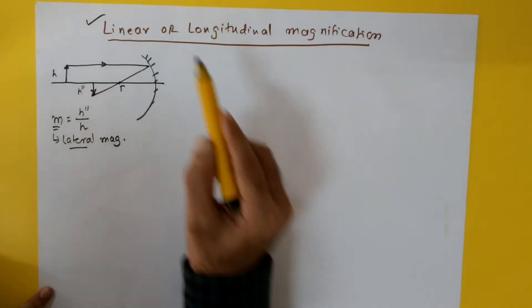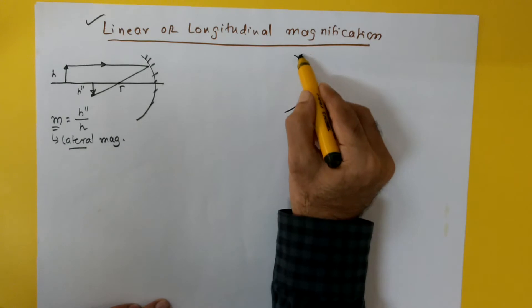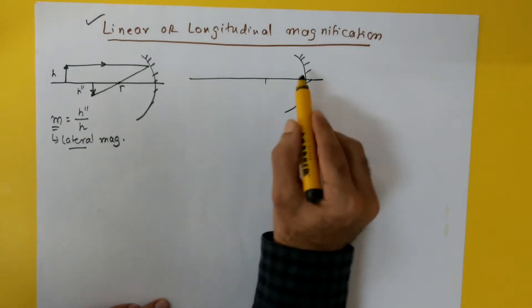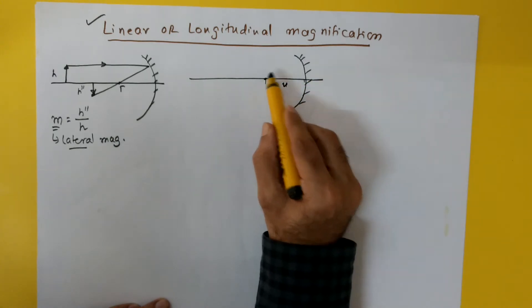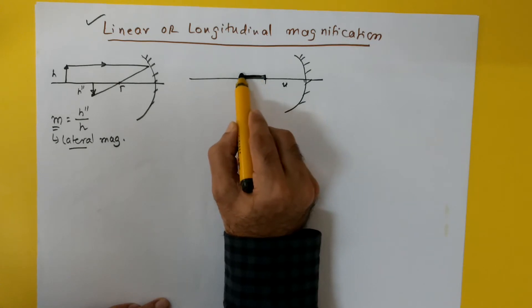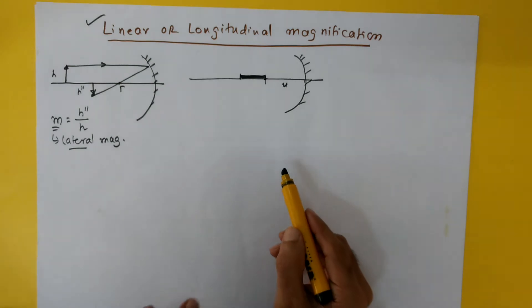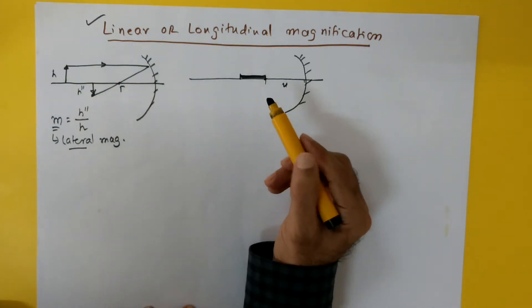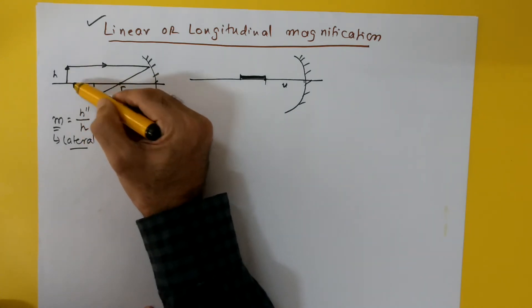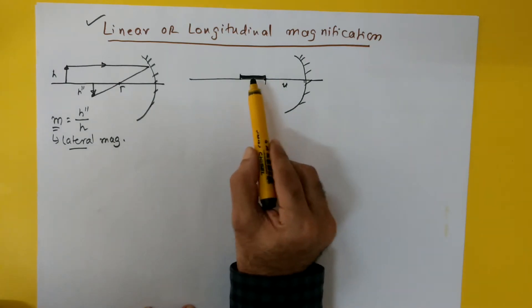What we are going to talk about is linear or longitudinal magnification. Let's say we have a concave mirror again with a principal axis. At a distance u, a thin pin-like object is placed parallel to the principal axis — it is lying on the principal axis. In this case, how do we calculate magnification? Here we can't simply compare heights.